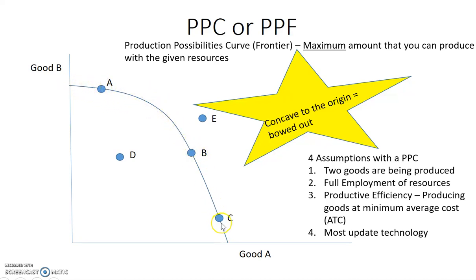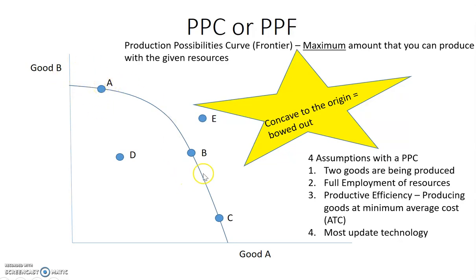If you look at it here, it's not linear — it's not a straight line. Rather, it's bowed out, and that's really important. We've got two goods, goods A and B. Because it is bowed out, that tells us these goods are not identical, because the resources that go into making good B are not easily transferable into making good A. We say this has an increasing opportunity cost.